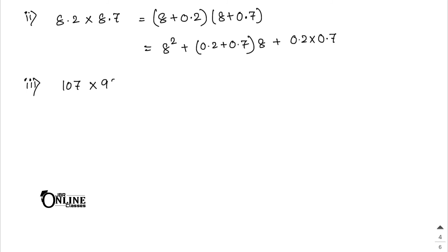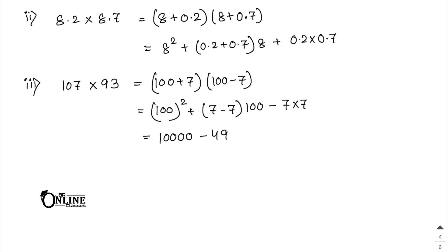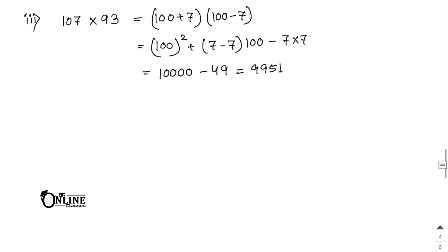Number 3: 107 × 93 = (100 + 7)(100 - 7) = 100² - 7² = 10000 - 49 = 9951.